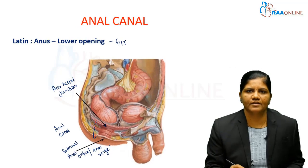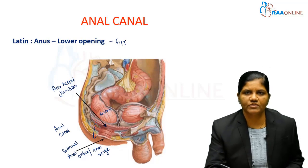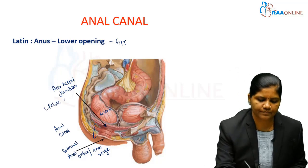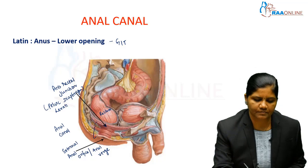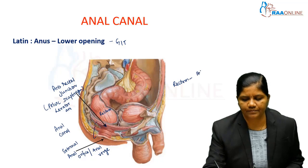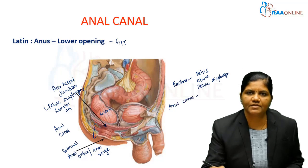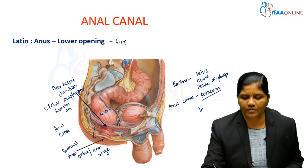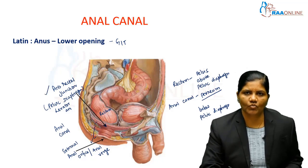The extent is from the anorectal junction above — where the rectum is located — down to the anal canal below. This junction is located at the level of the pelvic diaphragm. The rectum is located within the true pelvis above the pelvic diaphragm, and the anal canal is the continuation of the rectum present below the pelvic diaphragm in the perineum, from the anorectal junction to the anal verge, which is the external opening of the anal canal.